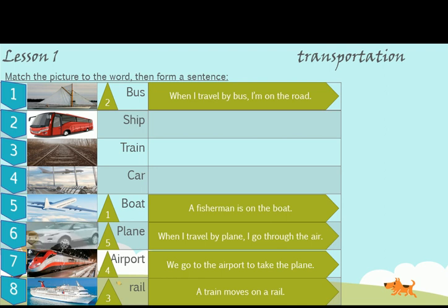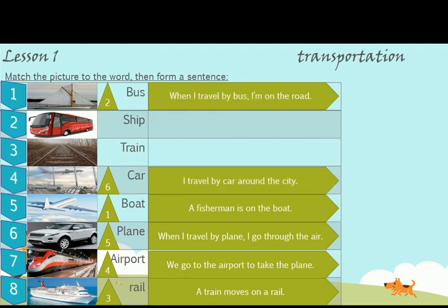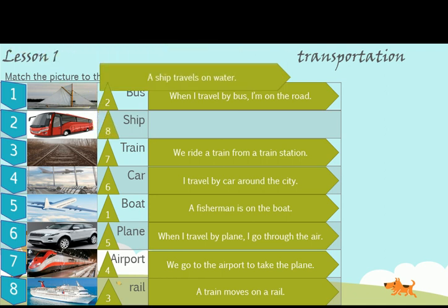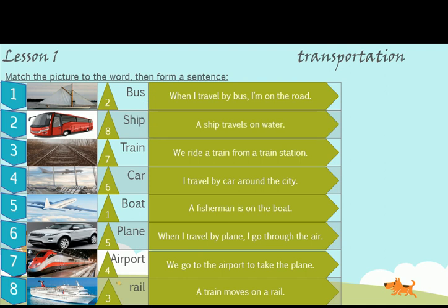Number 6. What's this? This is a car. I travel by car around the city. Number 7. What's this? This is a train. We ride a train from a train station. Number 8. This is a ship. A ship travels on water.